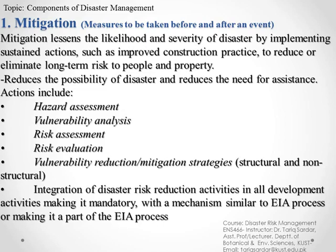The first component of disaster risk management is mitigation, which may be taken before and after a disaster event. Mitigation reduces the likelihood or severity of a disaster by implementing sustained measures such as improved construction practices or other long-term risk reduction strategies to protect property and people of any society or area.